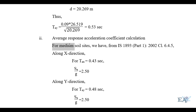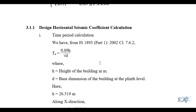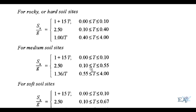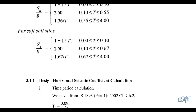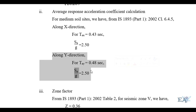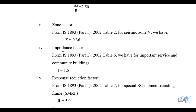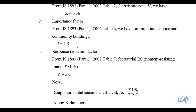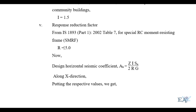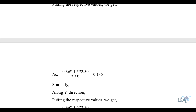The site condition is taken as medium soil. For TAx = 0.48 seconds — which lies between 0.10 and 0.55 seconds — SA/g = 2.50. The same value applies in the Y direction. The zone factor Z = 0.36 (Zone 5, very severe condition). The importance factor I = 1.5, since the building is an educational building with heavy movement of people. The response reduction factor R = 5.0 as the building is SMRF. Putting these values in, AH = 0.135.